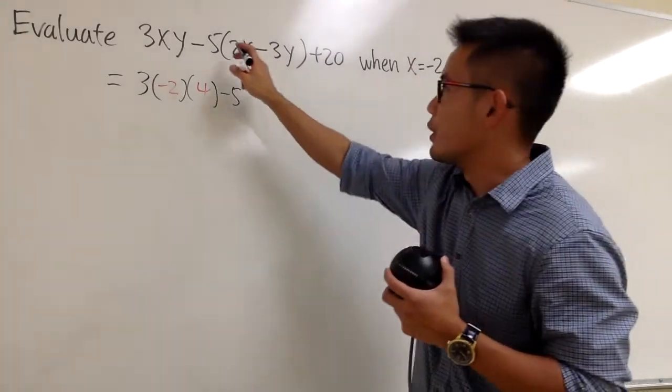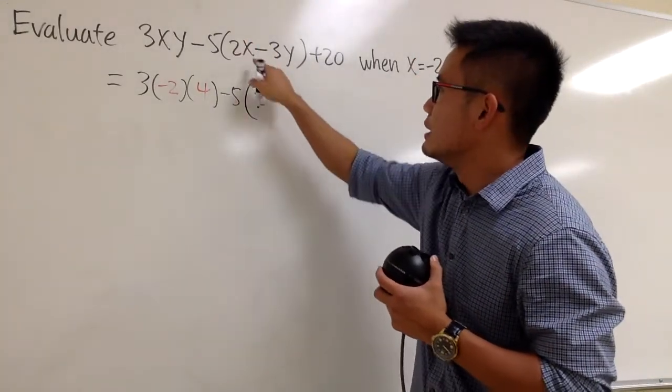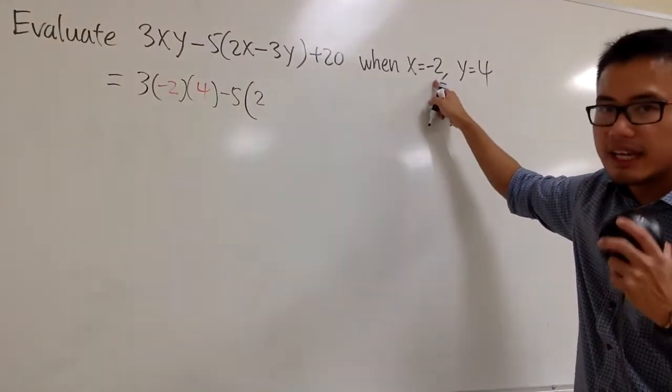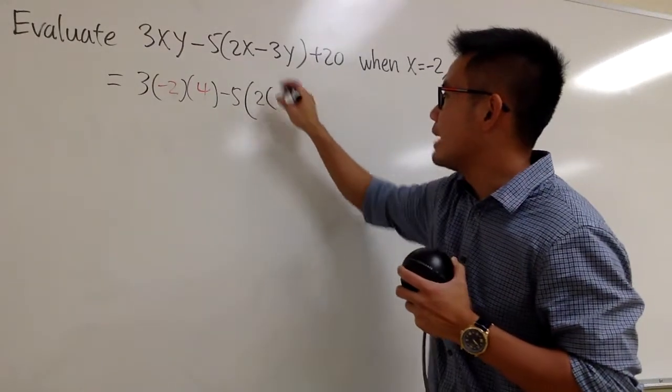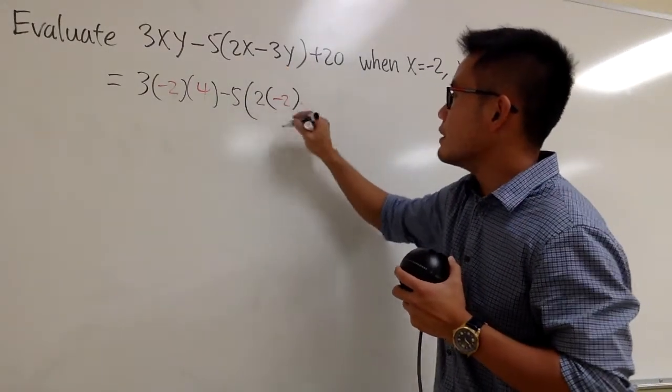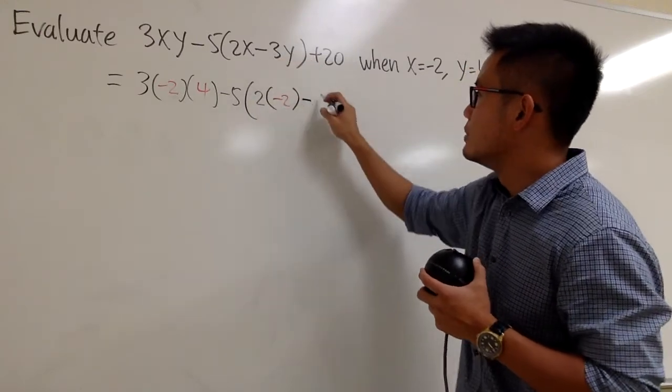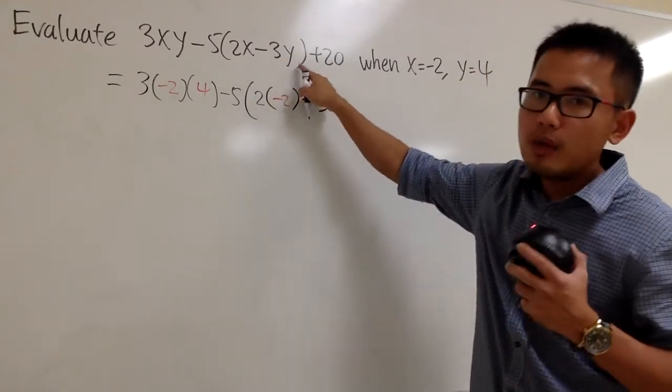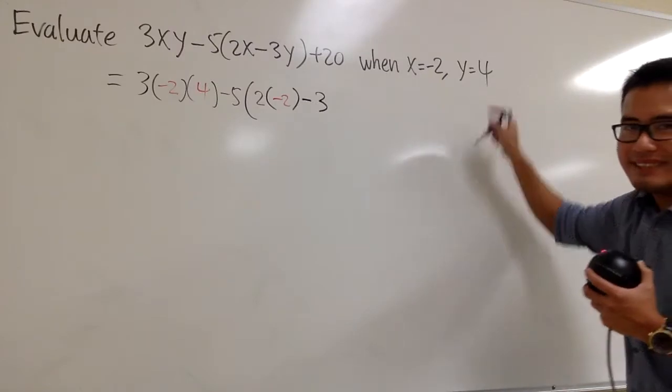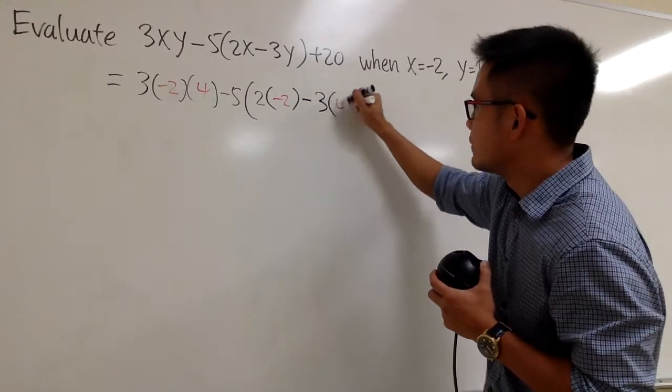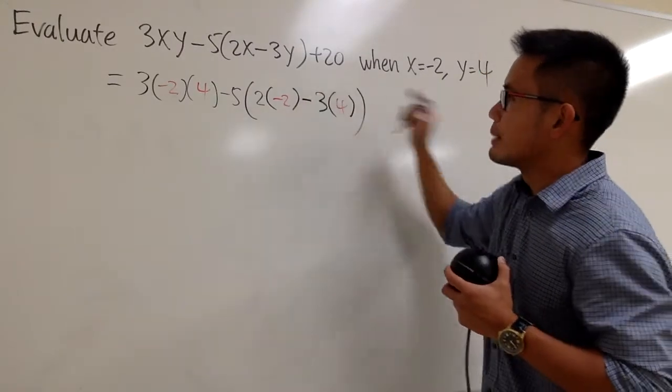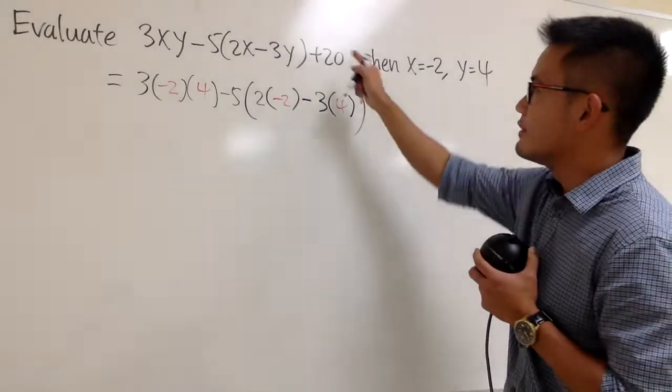And we open the parentheses, and then the 2, and then the x is negative 2. So we have 2 times negative 2, and then we have minus 3 times y. Y is 4, right? So 3 times 4 like this, and close the parentheses. At the end we still have this plus 20.